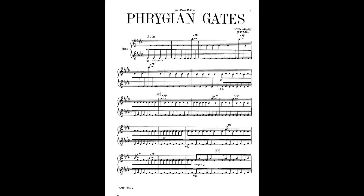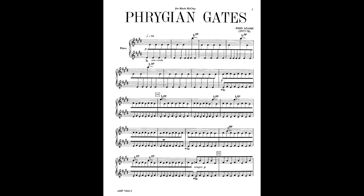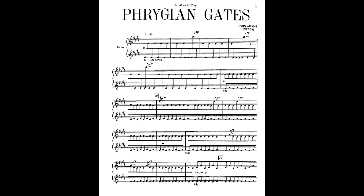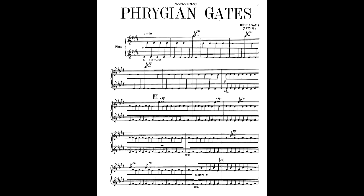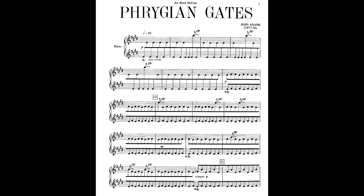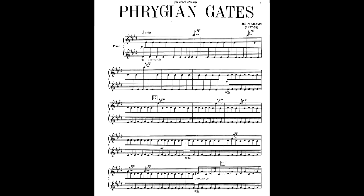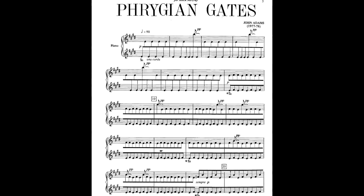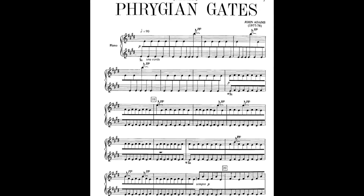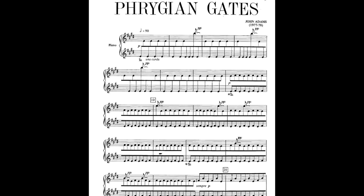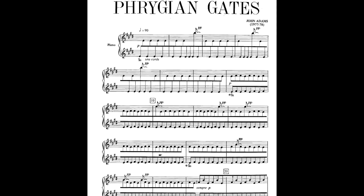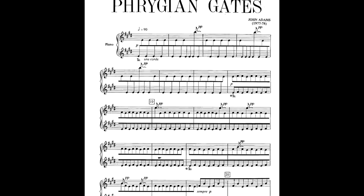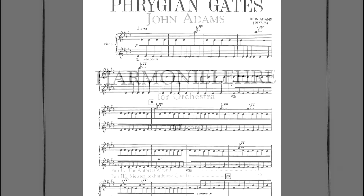John Adams's early works fall into this vein. His early piano piece Phrygian Gates, for example, is structured very cleanly around a cycle of fifths chord pattern that modulates between two different modes throughout. So the entire structure of this piece was mapped out in advance.